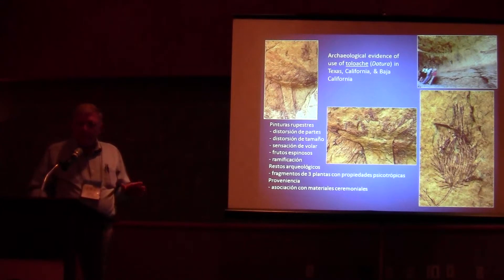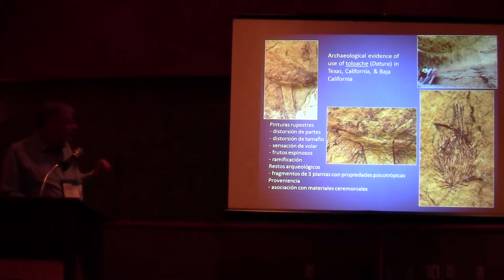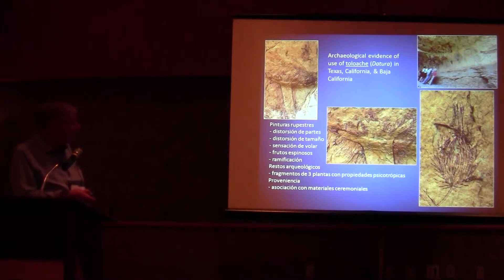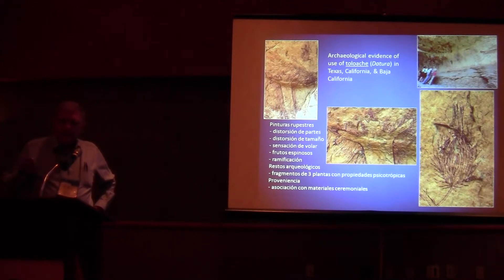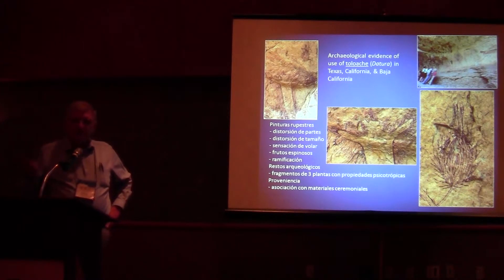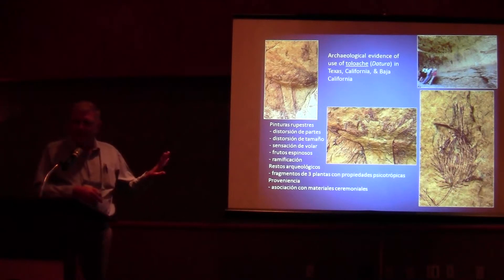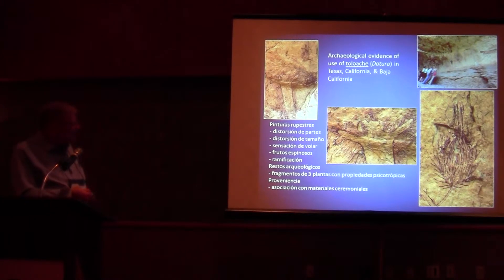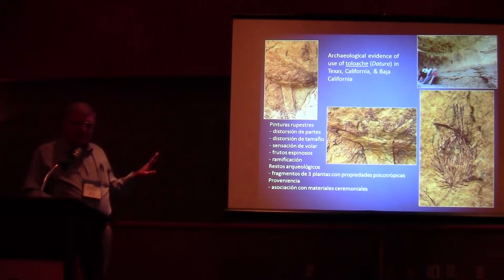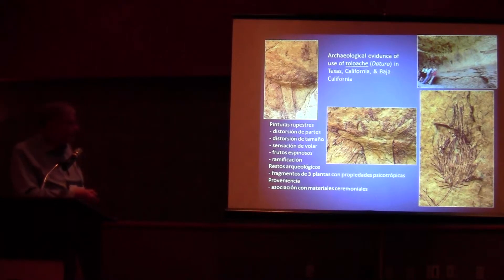In terms of evidence of use over time, one of the more fascinating examples includes petroglyphs in Baja California and Texas. People would take these plants under ceremonial conditions and, being a deliriant, it would exaggerate certain features such as size, the ability to move, and fly. We can see the exaggeration of size, the Datura capsules, the reduction of the head, and extension of the arms. Also importantly, associated with archaeological digs at the Rio Pecos in Texas, seeds were found along with several other items.